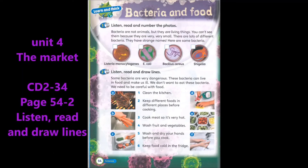Four: wash fruit and vegetables. Five: wash and dry your hands before you cook. Six: keep food cold in the fridge.